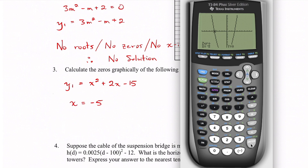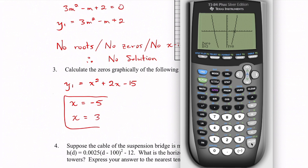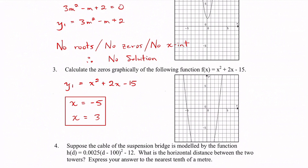Then for the second zero, go second, trace, option number 2 again, and move all the way over to the right intercept. Set the left bound below it and the right bound above it, click enter, and we get x equals 3. So our two solutions are x equals negative 5 and x equals 3. A graph confirms the parabola crosses the x-axis at both of those points.